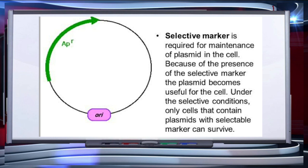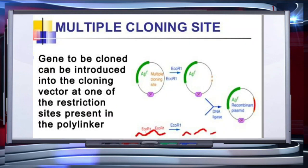Now let's understand selectable marker. It helps in identifying and eliminating non-transformants, and selectively permitting the growth of the transformants. Transformation is a process through which a piece of DNA is introduced into a host bacterium. The genes encoding resistance to antibiotics such as ampicillin and tetracycline are some useful selectable markers for E. coli.